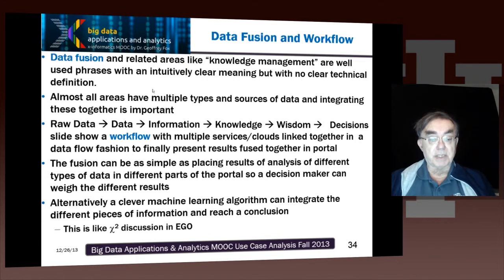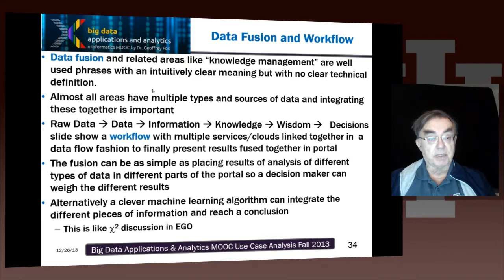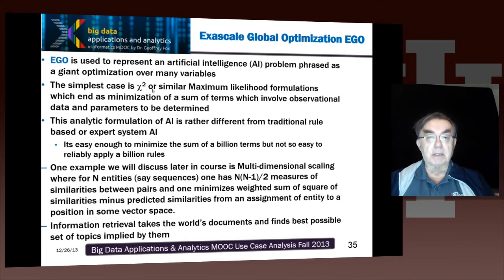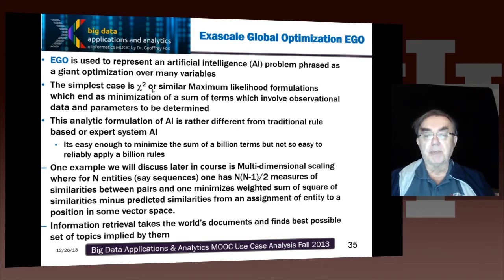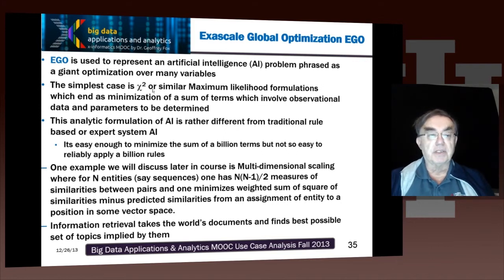When we come to global optimization, where we're summing over giant amounts of information — effectively dramatizing the world — that's effectively a fusion algorithm, because it's taking disparate things and adding them together to reach some sort of conclusion. That's this exascale global optimization, or EGO, classification. There are a class of artificial intelligence problems phrased as giant optimization over many variables. This is what I call global machine learning.